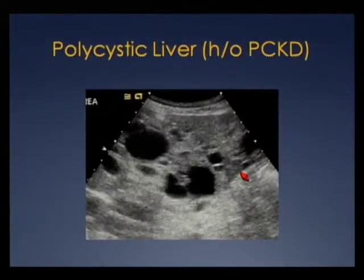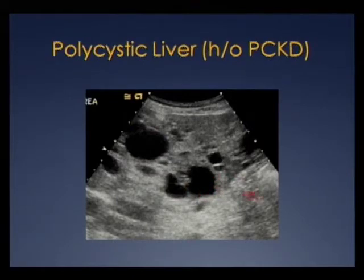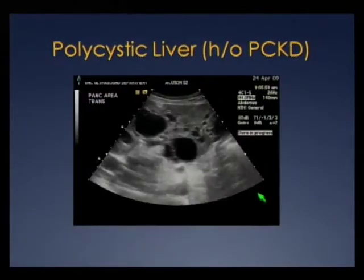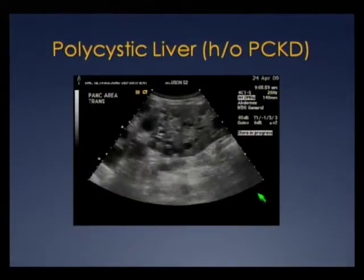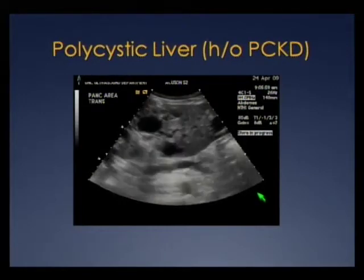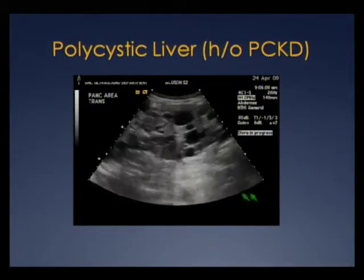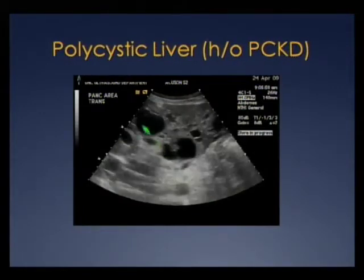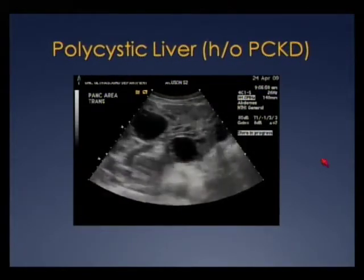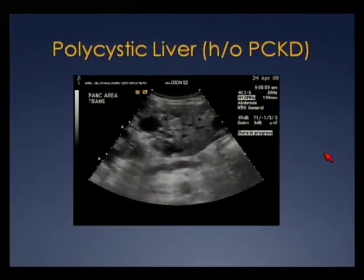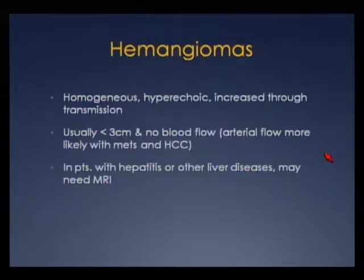Here's a patient with polycystic kidney disease who also has multiple cysts within the liver — polycystic liver. Notice that some of the cyst walls are a little irregular, and that's okay. The cine images of the same patient show anechoic lumens — very simple — easy to call those cysts.